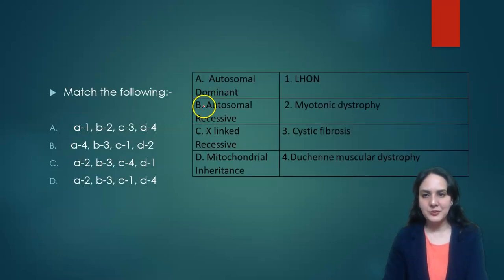Match the following: autosomal dominant disease is myotonic dystrophy. Autosomal recessive one is cystic fibrosis. X-linked is Duchenne muscular dystrophy which occurs mostly in males, and mitochondrial is LHON. So these are the answers.